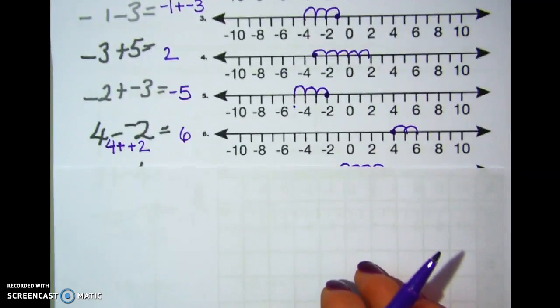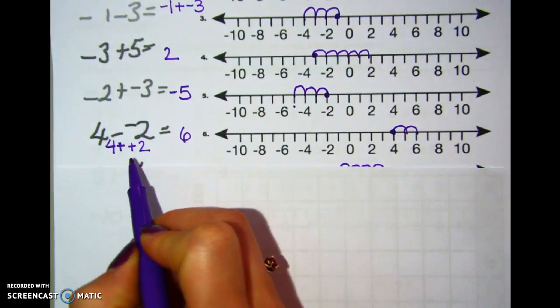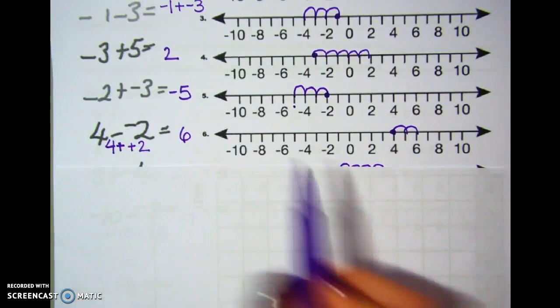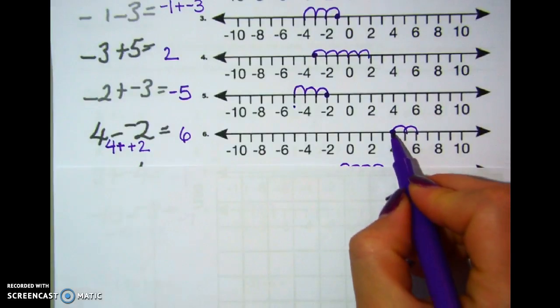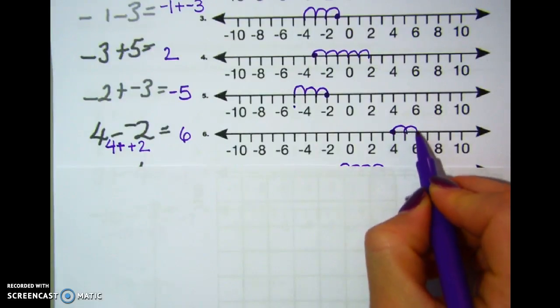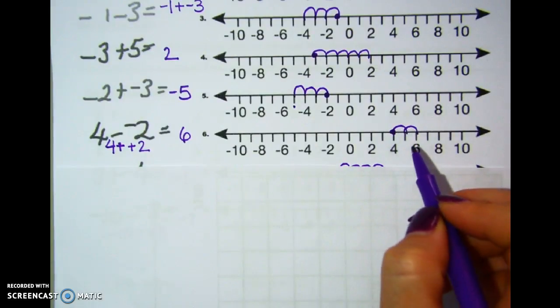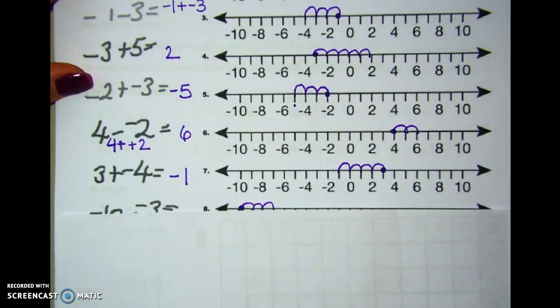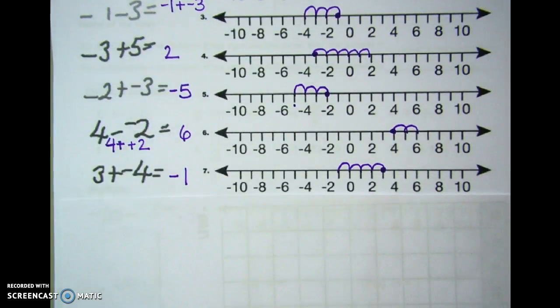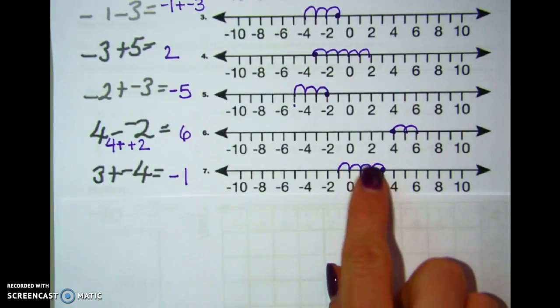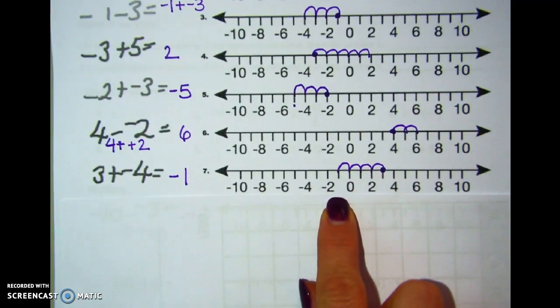4 minus negative 2. Well, I could rewrite that as add the opposite, so 4 plus 2 is 6, or on the number line, starting at 4, adding 2, and I end up at 6. For this one, 3 plus negative 4, I'm going to start at 3. Adding negatives means you move to the left, end up at negative 1.